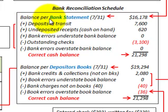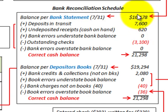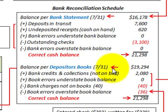We're going to have a balance per the bank statement at the end of the month — July 31 in this case — of $16,178. And we're also going to have a balance per the depositor's books at the same date, July 31, of $19,294.